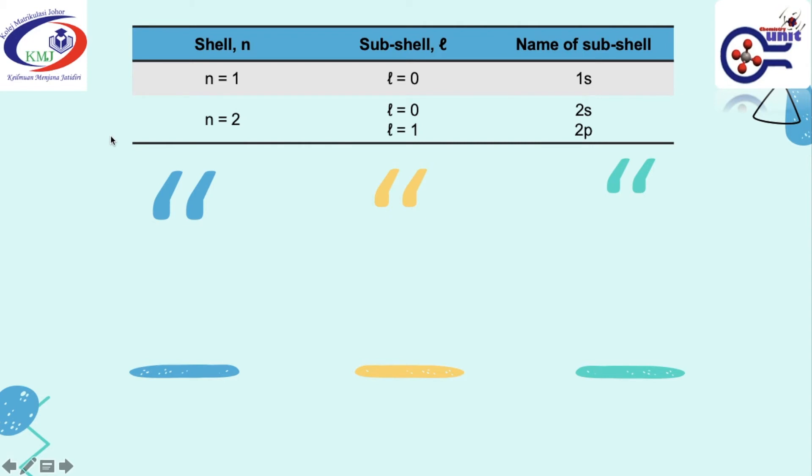Refer back to the table on the previous slide. When your subshell is 1S, you are going to have this spherical shape, n equal to 1, L equal to 0, so 1S. And for n equal to 2, L equal to 0, you are going to have 2S-orbital.